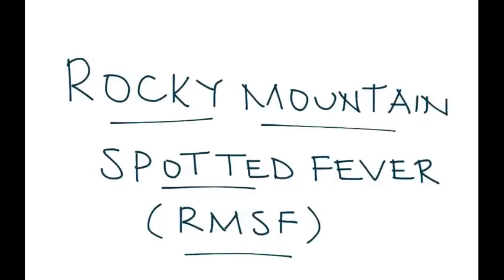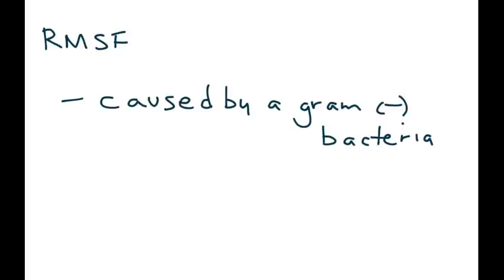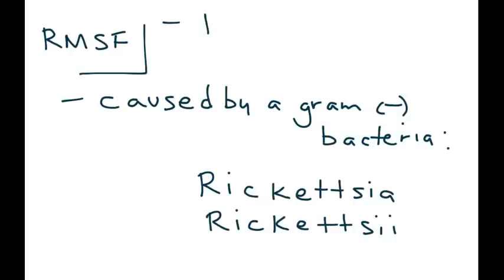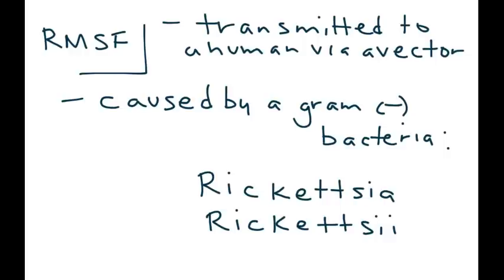Rocky Mountain spotted fever, abbreviated RMSF, is a medical condition caused by a gram-negative bacteria called Rickettsia rickettsii. This bacteria is transmitted to a human via a vector known as the Ixodid tick, and this tick is very important because it's found in wooded areas.